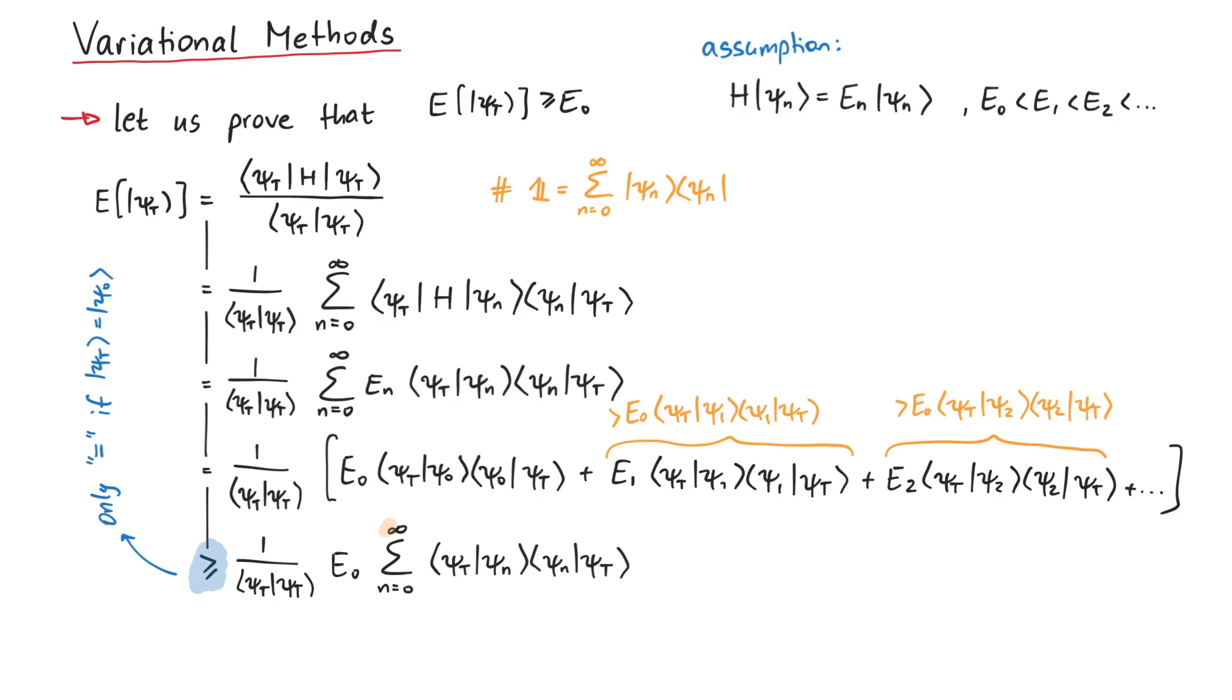We can now remove the ket bra psi n terms, since they are a complete basis, and end up with E0, the ground state energy, which completes the proof. And that's pretty much it for this video. Thanks for watching.